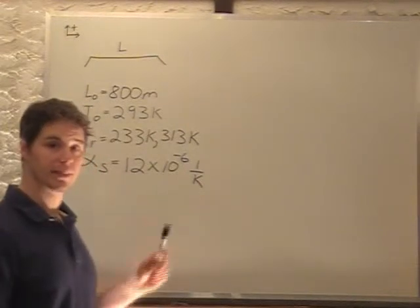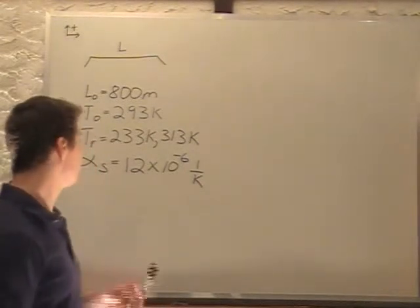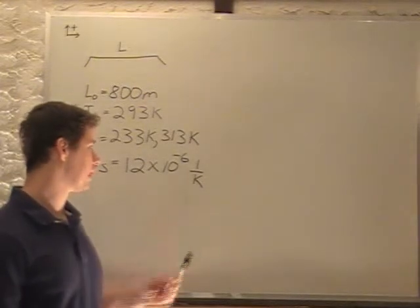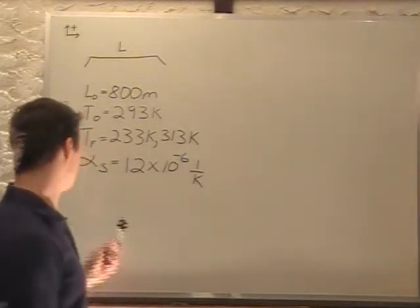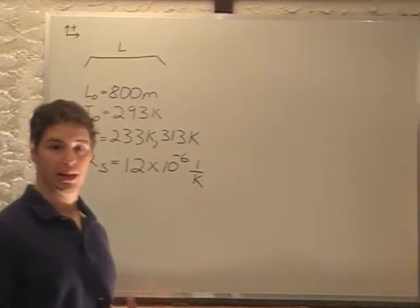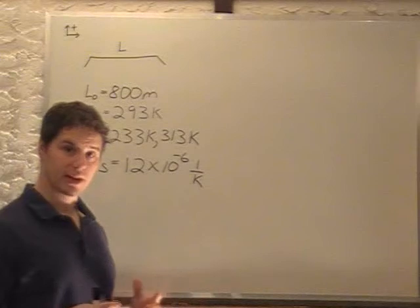Those are our extreme temperatures. We also know that the alpha for steel is 12 times 10 to the minus 6, 1 over Kelvin. We're asked to find the maximum length of this bridge and the minimum length of this bridge due to its expansion and contraction.